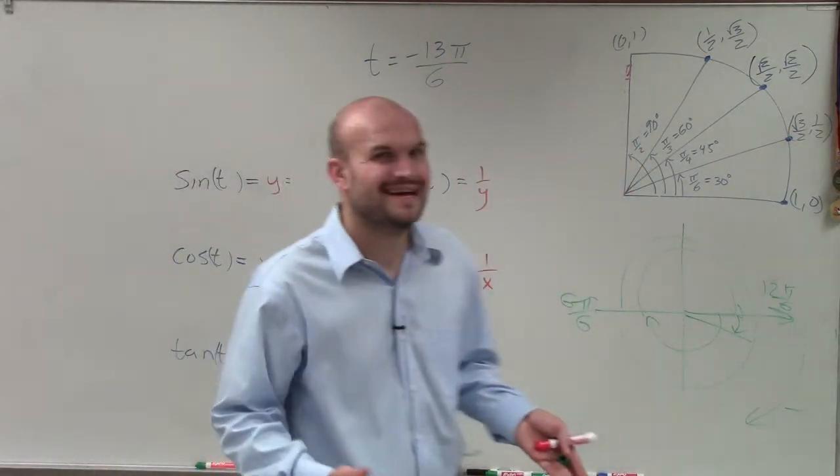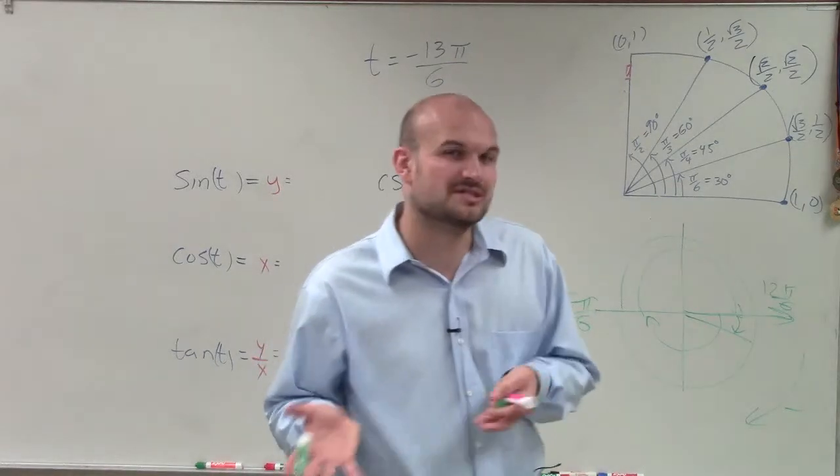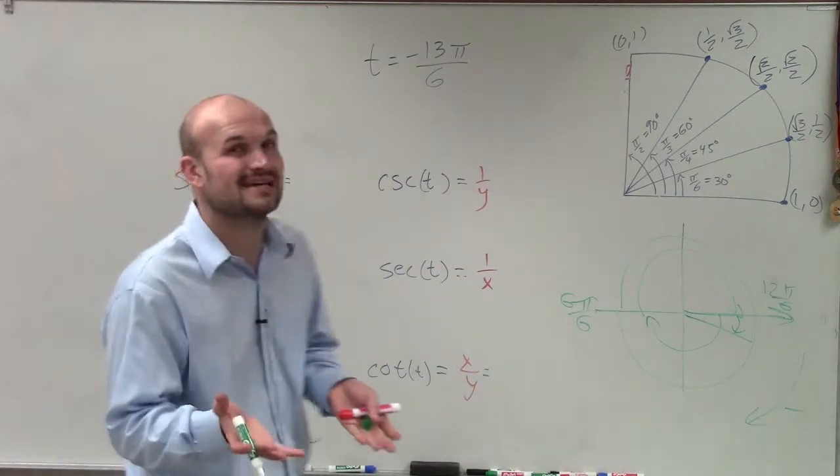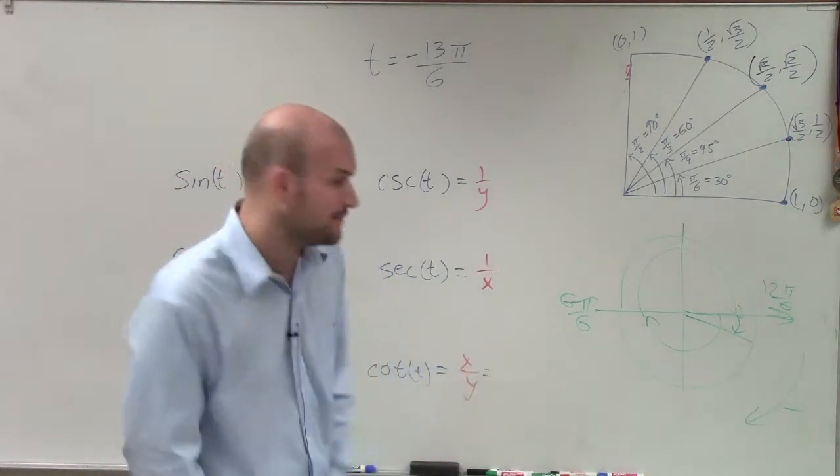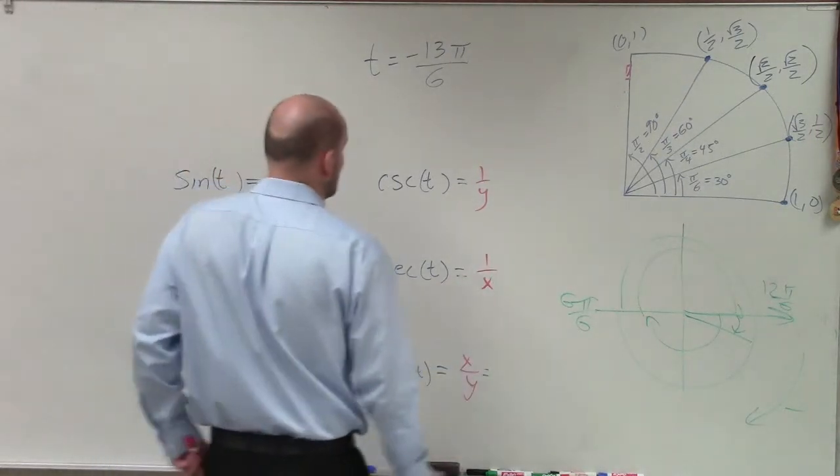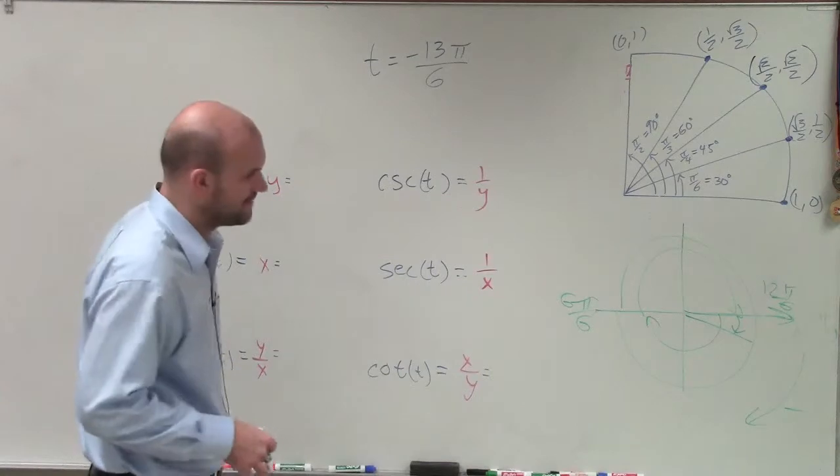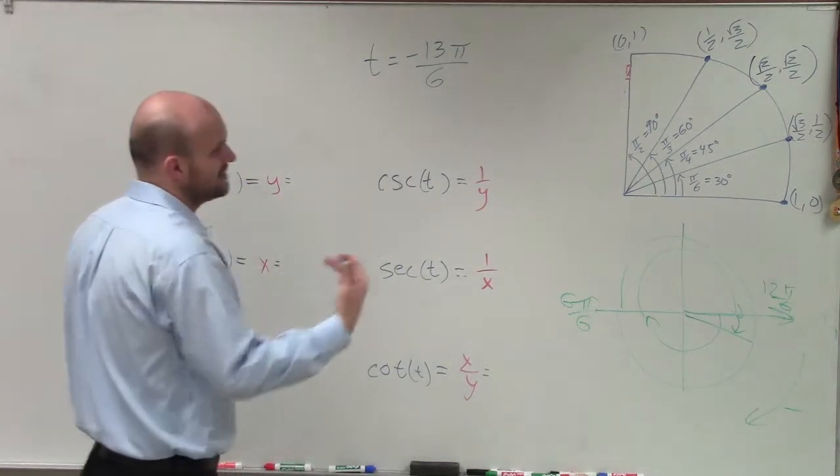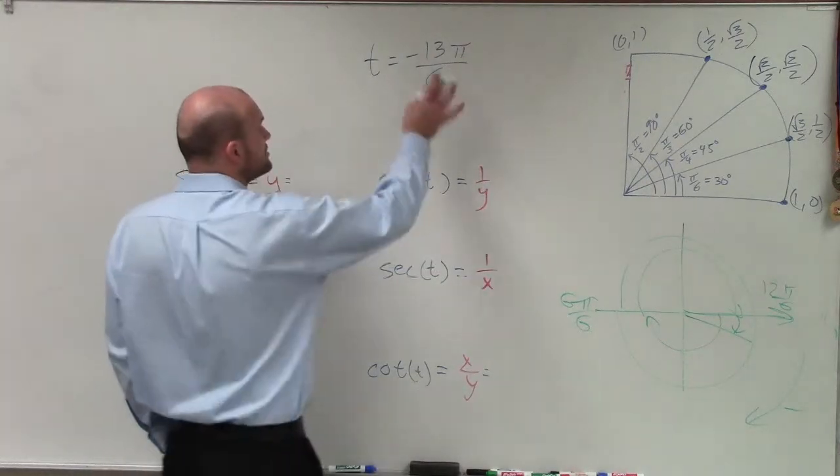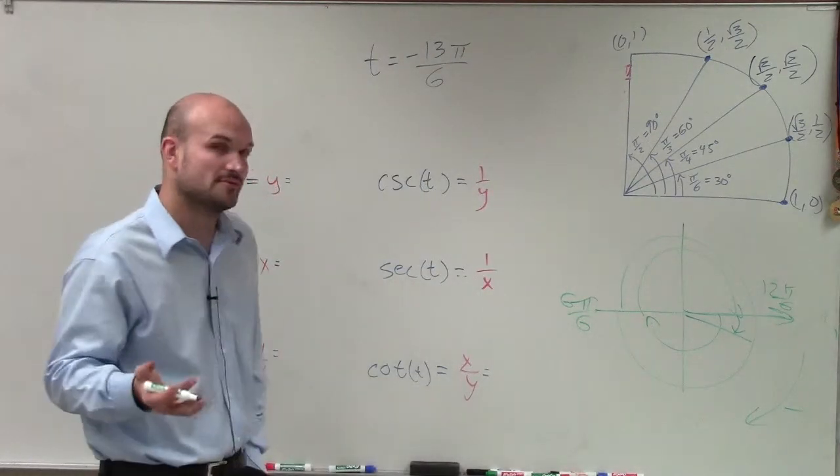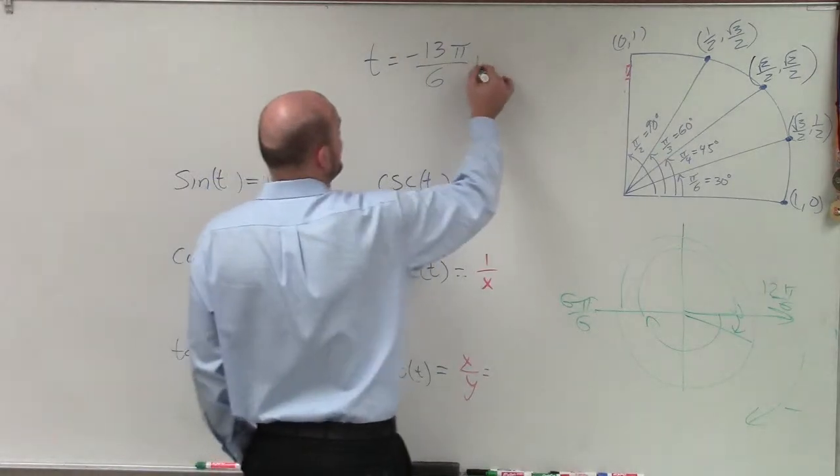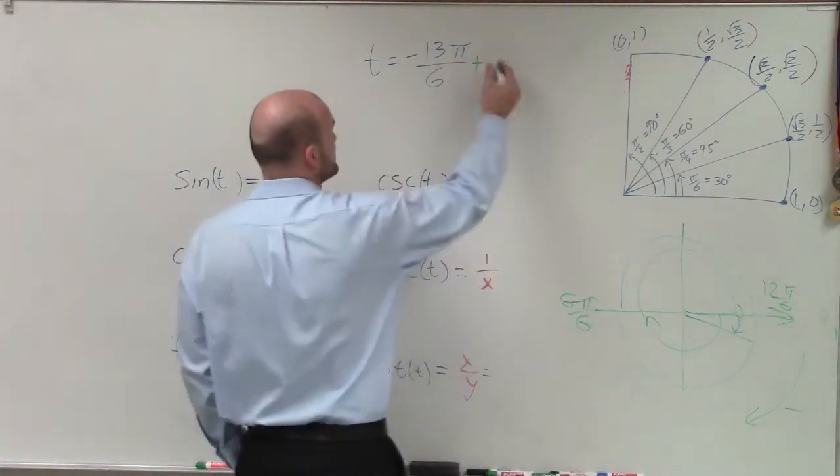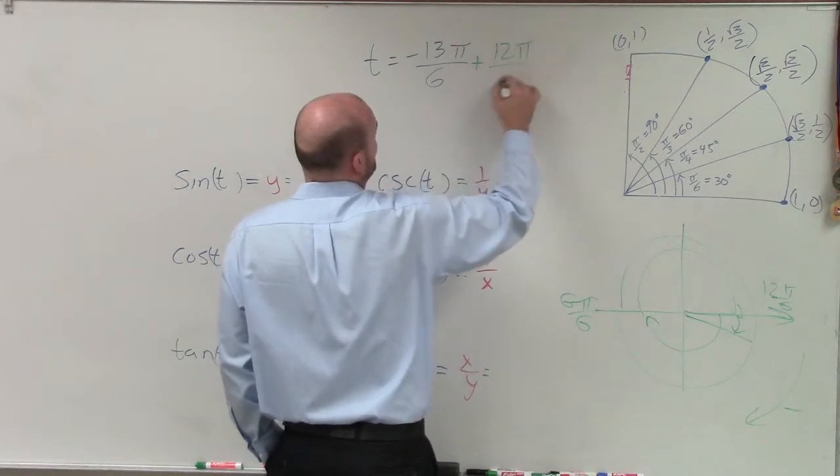But a lot of times what I like to do is just evaluate for that coterminal angle, which is going to be the smallest one, that we can evaluate for the exact same points. So to find the coterminal angle, the smallest coterminal angle, what I can do is I'm just going to add periods of 2π. Now notice, a period of 2π is 12π over 6. So if I add 12π over 6, my angle now is going to be negative π over 6.